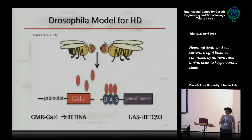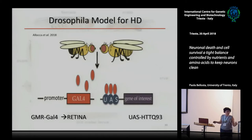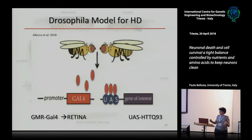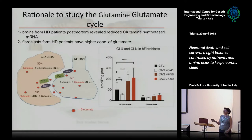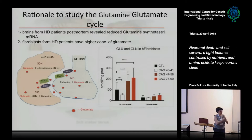How to study this in Drosophila? As I told you, we have the GAL4/UAS system. We can use any promoter we like. We study the retina and then we express a human gene that contains 93 CAG repeats. The rationale for doing this first: I was reading about this and saw that patients with Huntington's disease had reduced levels of the enzyme glutamine synthetase.